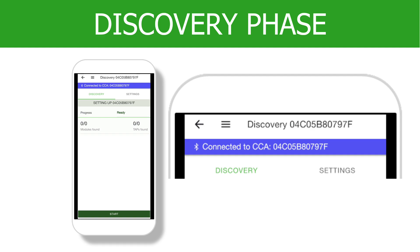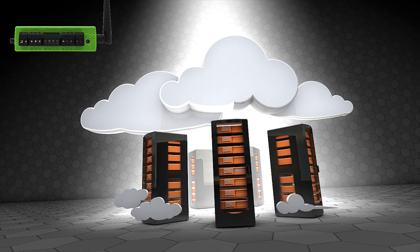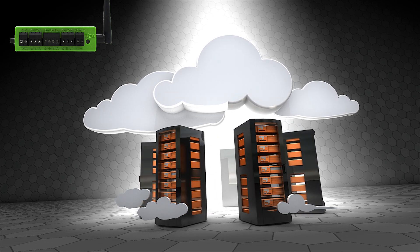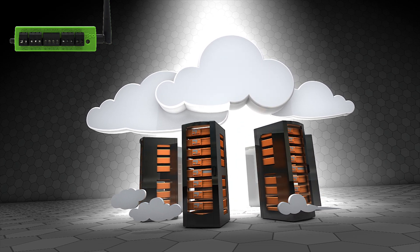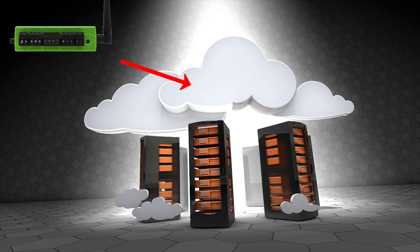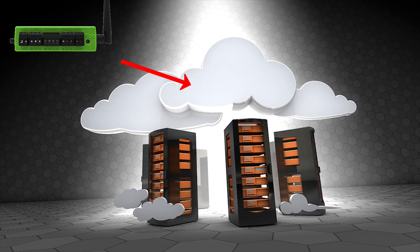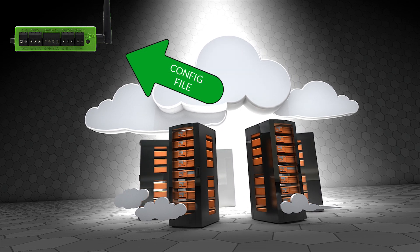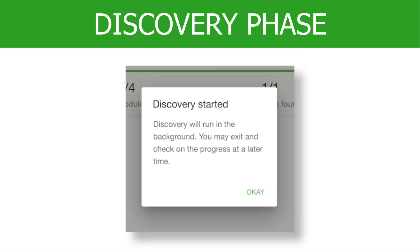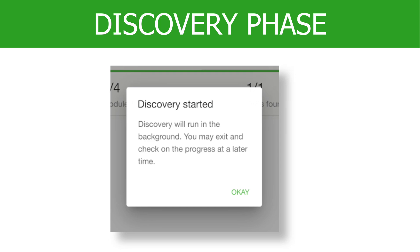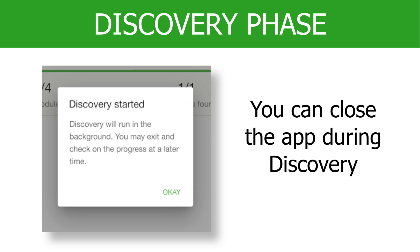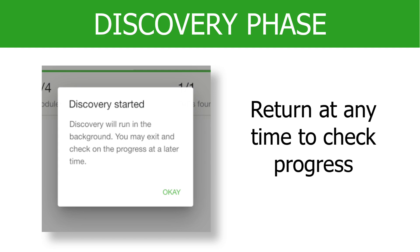Now we are in the final stages of commissioning. This last phase is called Discovery and it is identified at the top of the screen. During this phase, the CCA queries the Tygo server for the configuration file to begin the process of searching for each TS4 entered in the previous steps. This query and reception of the file can take some time, but it is usually complete within a few minutes depending on network quality. Discovery automatically begins once this file is received. A message will appear stating Discovery will run in the background and it is now safe to close the app. You can log back in at any time to check on Discovery progress.